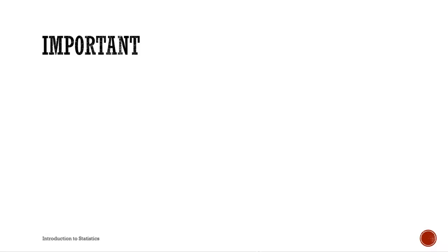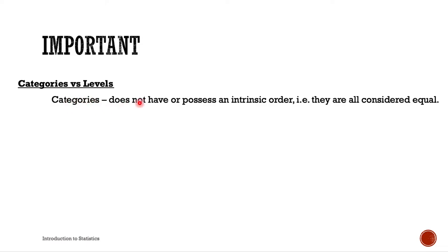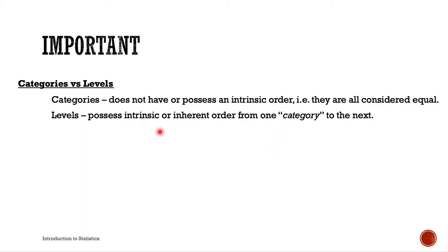An important distinction: categories do not possess an intrinsic order — they are all considered equal. For instance, male and female are equal, as are different religious affiliations. Levels, on the other hand, do possess intrinsic order. Strongly agree is higher than agree, and strongly disagree is lower than disagree.